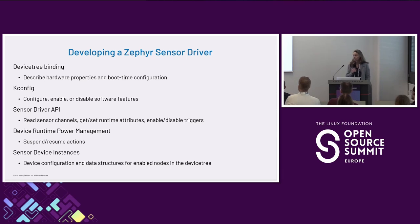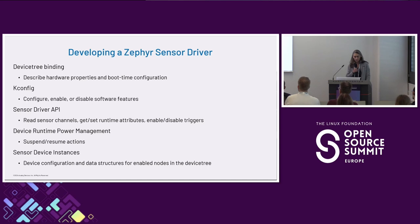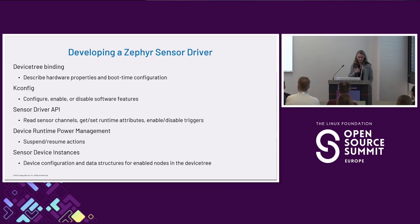Let's dig into the first part about developing a sensor driver. There are a number of key components, starting with a device tree binding describing the hardware properties and the boot-time configuration of the hardware. Then Kconfig — a configuration system borrowed from the Linux kernel — used to configure, enable, or disable software features of the driver. There's the sensor driver API itself, which is the C runtime implementation for reading sensor channels, getting attributes, and enabling or disabling triggers. Device runtime power management is probably a whole talk in itself — I'm just going to cover it for awareness about power management.